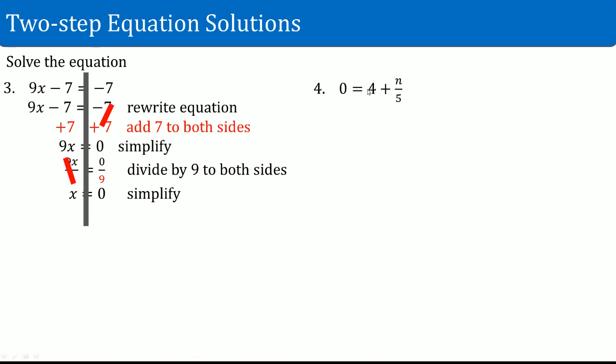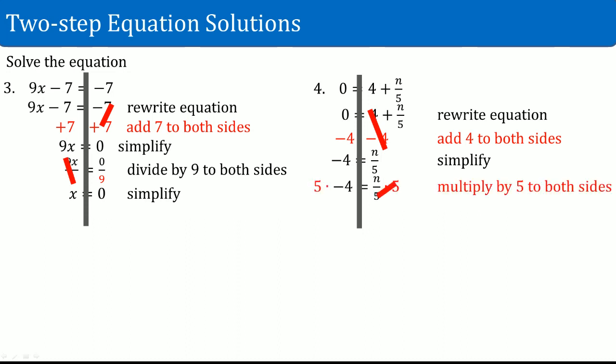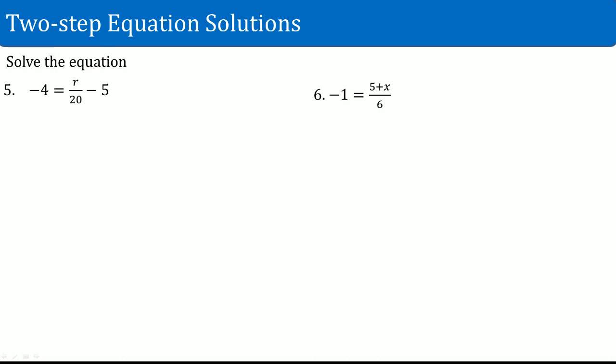Number four: 0 equals 4 plus n divided by 5. We have a 4 that is added as well as a divide by 5. We want to get rid of the 4 — which is add 4 — by subtracting 4. That cancels. The only thing left over on the right-hand side is n divided by 5; on the left-hand side it's negative 4. To undo divide by 5, you multiply by 5. That cancels out. On the left-hand side you get negative 20; on the right-hand side you get n.